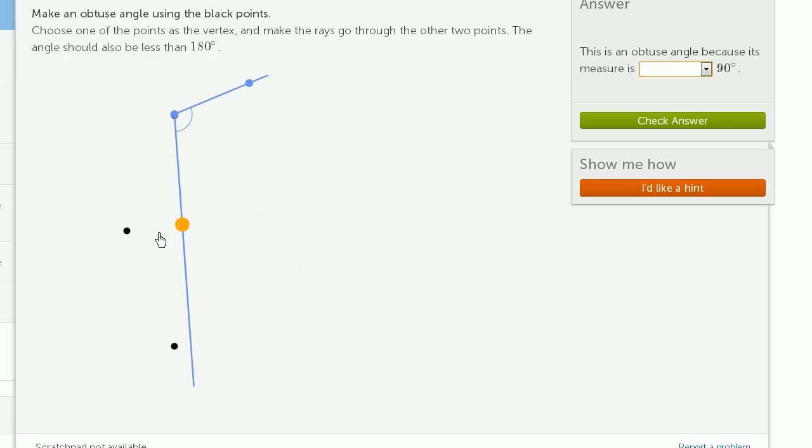You could just try to pick that point. But then when you go through these other two points, this right over here is an acute angle. This is less than 90 degrees.